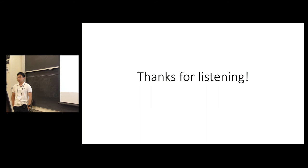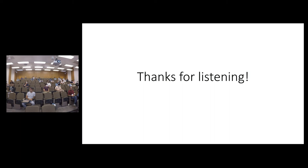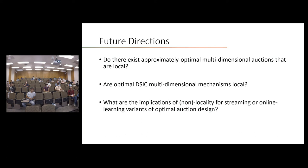Thanks for listening, and I welcome any questions. [Question from audience]: I didn't quite understand the argument — did the optimal dual variables need to have a certain structure in order to be optimal, or did you fully characterize the optimal dual variables? Yes, good question. We give a set of dual variables and prove they are the optimal dual. By the duality argument, any optimal mechanism must satisfy complementary slackness with this set of dual variables. This was just for two bidders, two days.